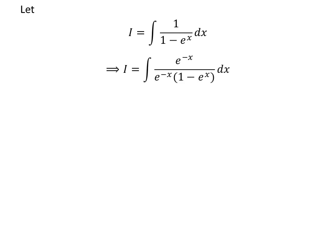Multiplying the numerator and the denominator of a fraction by a common factor does not change the value of the fraction. Let us multiply the numerator and the denominator of the integrand by exponential of minus x. Let us remove the brackets in the denominator. Exponential of minus x times 1 is exponential of minus x, and exponential of minus x times exponential of x is 1. So i is equal to exponential of minus x upon exponential of minus x minus 1.